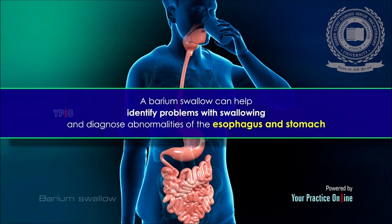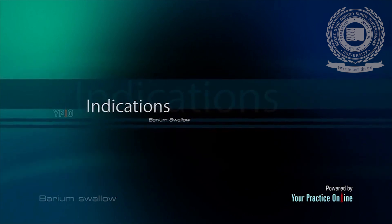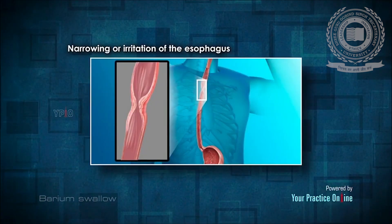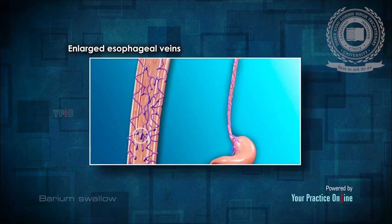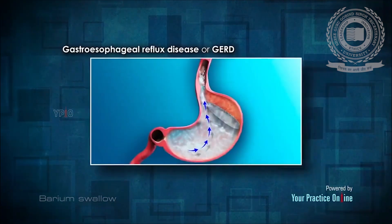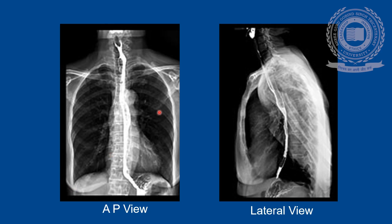A barium swallow can help identify problems with swallowing and diagnose abnormalities of the esophagus and stomach. The barium swallow test is used to diagnose structural and functional abnormalities of the upper GIT such as swallowing disorders, narrowing or irritation of the esophagus, hiatus hernia, enlarged esophageal veins, ulcers, tumours, pre-cancerous growths called polyps, and gastroesophageal reflux disease. These are the two views obtained: we can see the entire esophagus outlined by the contrast column till the DE junction — the first is the AP view and the second is the lateral view.